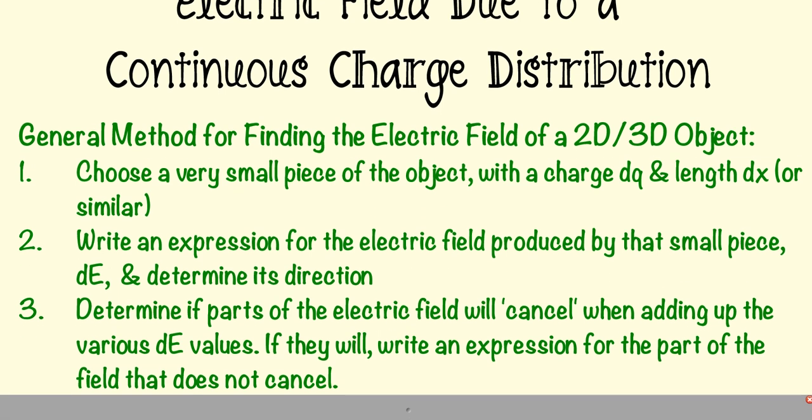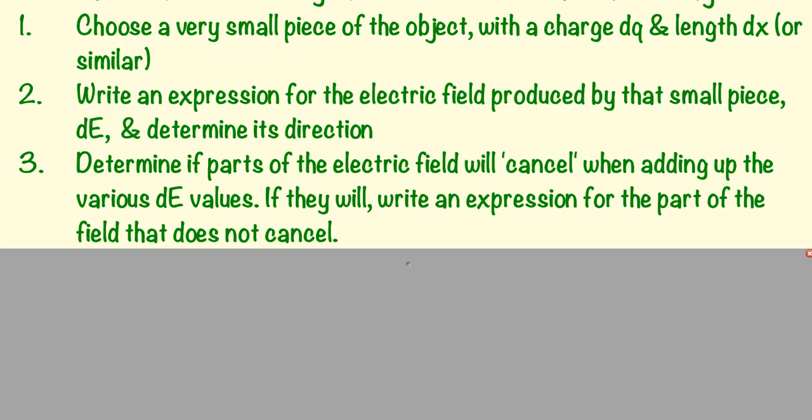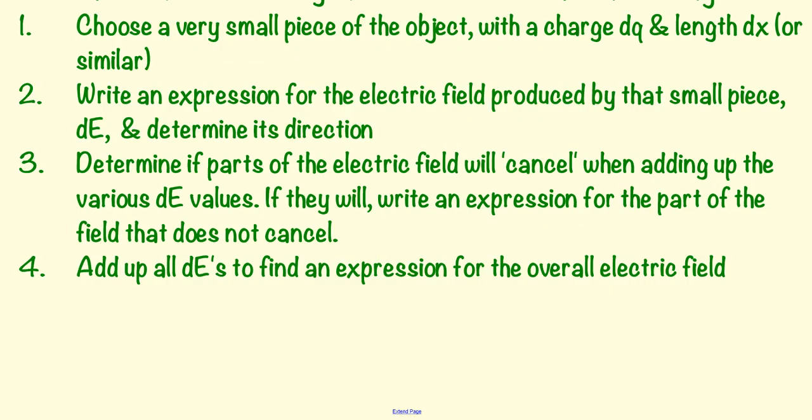Step three talks about determining if parts of the electric field are going to cancel when you're adding up all the various dE values. If there are parts that will cancel, commonly would be an x component or a y component, then you want to write an expression for the part of the field that does not cancel.